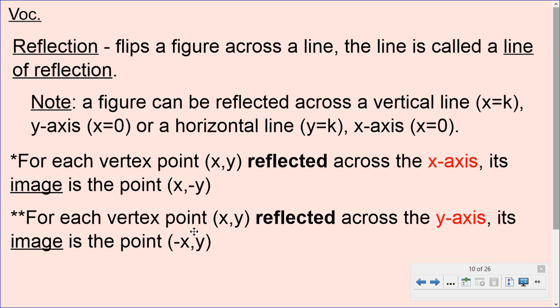For each vertex point (x, y) reflected across the y-axis, the image of the point is now (negative x, y). That's going to the opposite side, left to right, so x to negative x, the y stays the same.